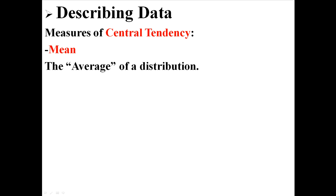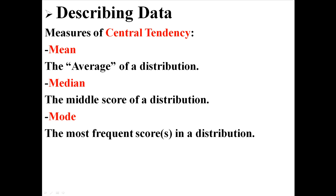There is the mean, which is the average of a distribution. There is the median, which is the middle score of a distribution. And there is the mode, which is the most frequent score or scores within a distribution.